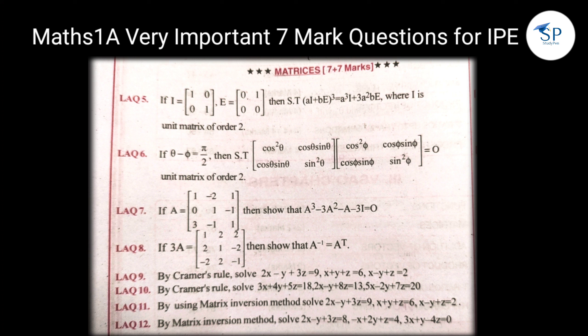Then solve that: cos²θ [cosθ sinθ; cosθ sinθ] sin²θ and next cos²π, cosπ sinπ, cos π sin²θ is equal to O, the zero matrix of order 2. Also: if A is equal to [1, -2, 1; 0, 1, -1; 3, -1, 1], then show that A³ − 3A² − A − 3I = 0. And next: if 3A is equal to [1, 2, 2; 2, 1, -2; -2, 2, -1], then show that A inverse is equal to A transpose.